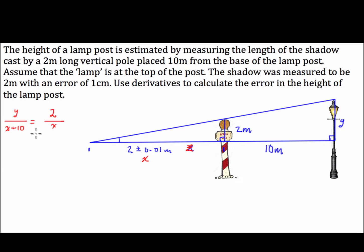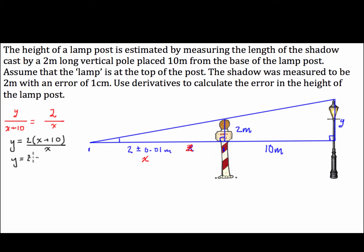We're going to use the fact that similar triangles have the same ratio of sides. The ratio of Y, the big side, over the entire length gives us: Y over (X + 10) equals 2 over X. Now we have to rearrange this formula to get Y in terms of X. Multiplying both sides by (X + 10), we get Y equals (2X + 20) over X.